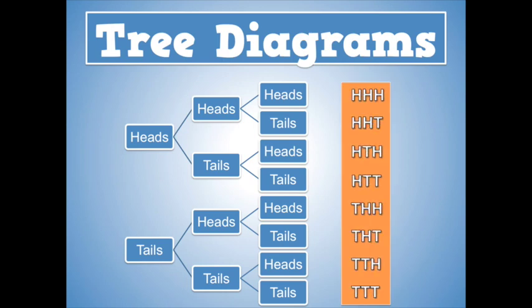And I like to abbreviate them. So I would do HHH for heads, heads, heads. HHT, heads, heads, tails. Heads, tails, heads. Heads, tails, tails. Tails, heads, heads. Tails, heads, tails. Tails, tails, heads. And tails, tails, tails. Those are all of your possible outcomes.